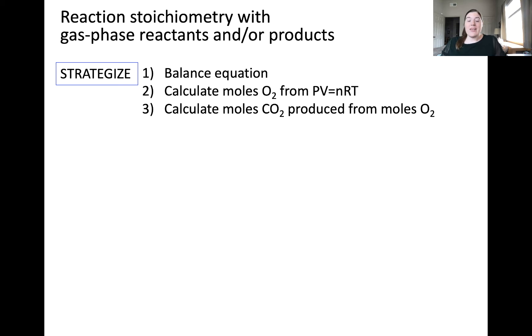Next, we'll calculate the moles of oxygen using the ideal gas law, PV equals nRT. Once we have the moles of oxygen, we can calculate the moles of CO2 that will be produced given that starting quantity of oxygen. Let's solve by following these steps.